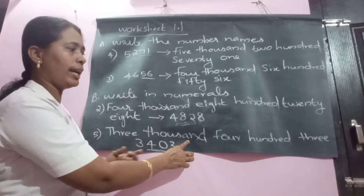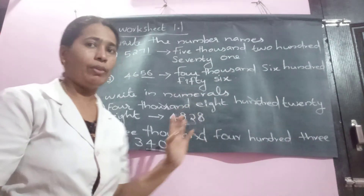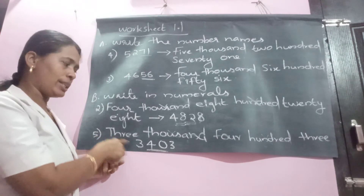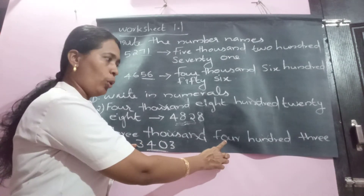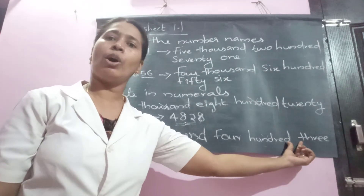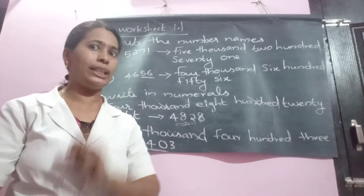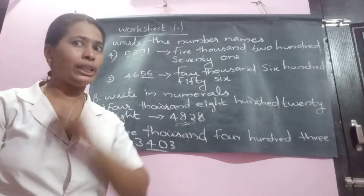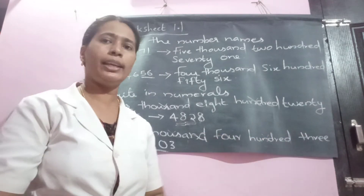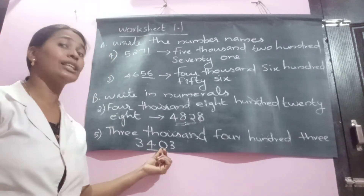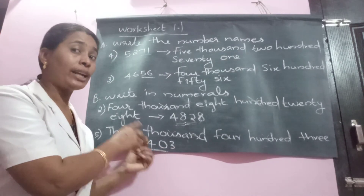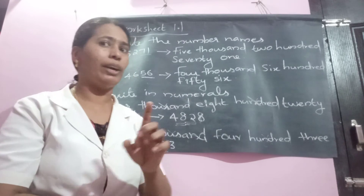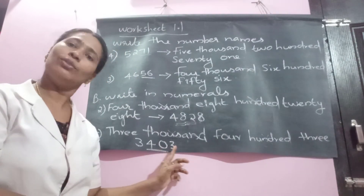Next: three thousand four hundred and three is given. Avoid the place value words — write 3, then 4. But here only 3 is given for the ones and tens place, and we need 2 digits. If you write 3-0 it becomes 30, which is wrong. So you must write 0 first, then 3, giving 03 — so the full number is 3403.